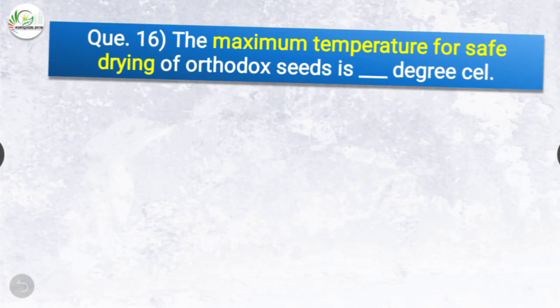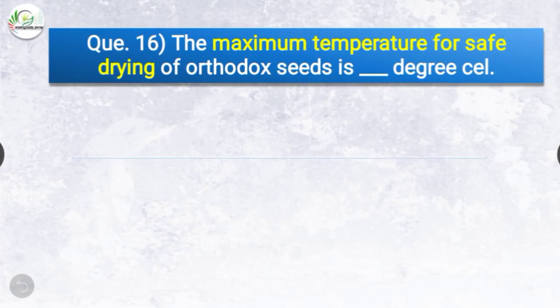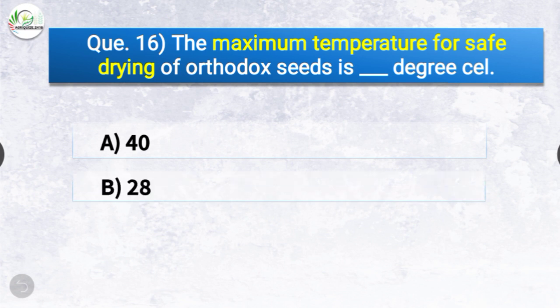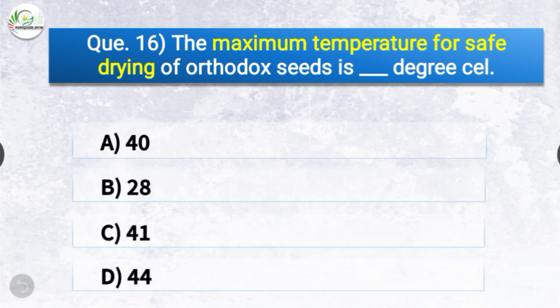Question number sixteen: The maximum temperature for safe drying of orthodox seed is how many degrees Celsius? The options are 40, 28, 41, or 44. The correct answer is option C — 41. The maximum temperature for safe drying of orthodox seed is 41 degrees Celsius.